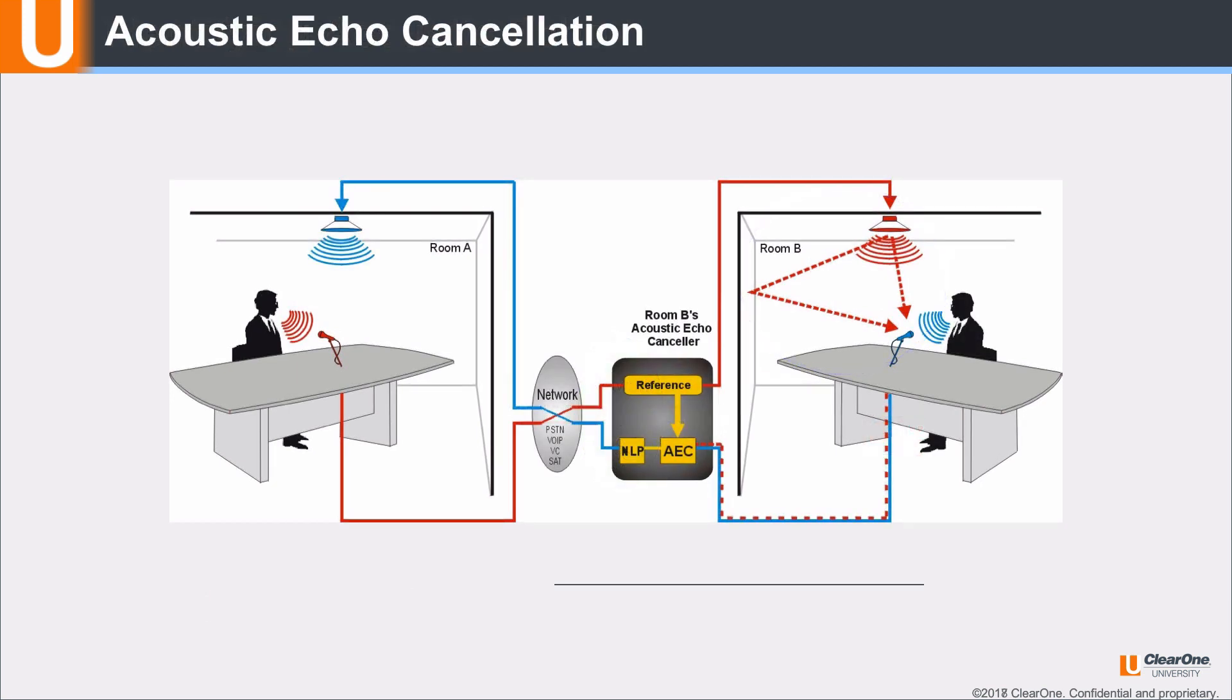As previously mentioned, to remove the echo that room A is hearing, we need an acoustic echo canceler in room B, as shown here. This diagram is a simplified representation of the acoustic echo cancellation process. The process starts with the acoustic echo canceler, or AEC, sampling the audio coming from room A before it is sent to room B's loudspeaker. This is the AEC reference signal.